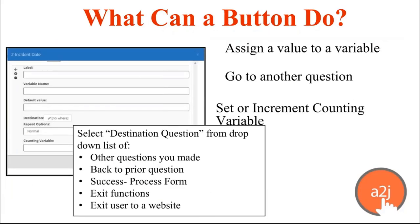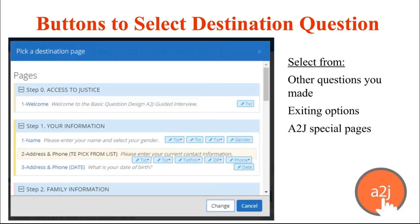A button can assign a value to a variable, branch an end user to another question, or set and increment counting variables — which we'll talk about in the repeat loop section in video four. The destination options, when you click the button next to the word 'Destination,' let you select from a menu of the other questions you've already created, or special A to J commands like back to prior question, success process form, and different exiting options. This is the menu that pops up when you click destination — you can select from questions already created, or scroll down for special exiting buttons and the back to prior page command.